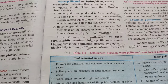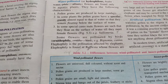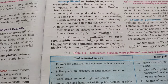We choose which pollen grains from which flower are to be sprinkled on the stigma of the female parts. This way, we can ensure that cross-pollination is artificially done and the offsprings will have the characteristics we want. If we want a hybrid of two different flowers, we can use artificial pollination.